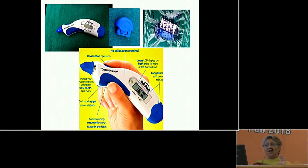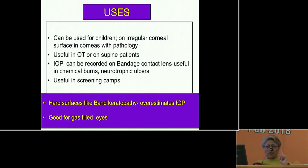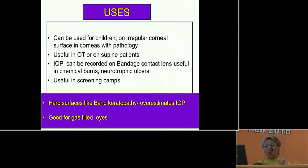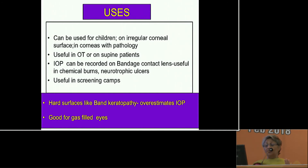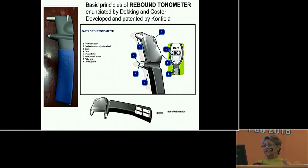Regarding the Tonopen — it can be used for children, irregular corneal surfaces, corneas with pathology, and is very useful in the operating theatre. All of us use it in EUA, on supine patients, and it can even be recorded on bandage contact lenses. It is very useful for corneal burns and neurotrophic ulcers, and in screening camps. However, on hard surfaces like band keratopathy it overestimates intraocular pressure. It is also good for measurement of IOP in gas-filled eyes.